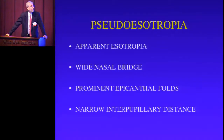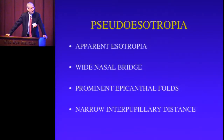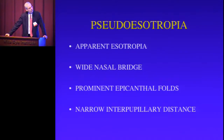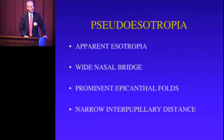One of the most common problems we see is pseudoesotropia. For all those who see young children, parents come in with a child who has a wide nasal bridge, prominent epicanthal folds, and close-set eyes — looking slightly to the left or right — and it certainly looks like those eyes are deviated.